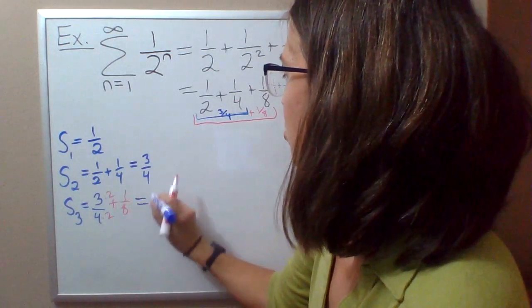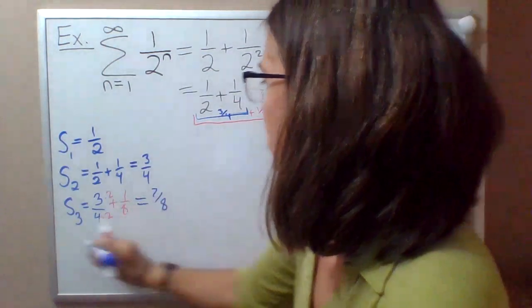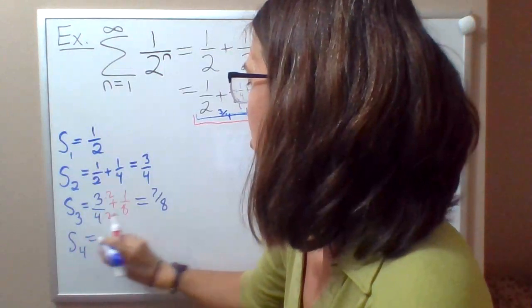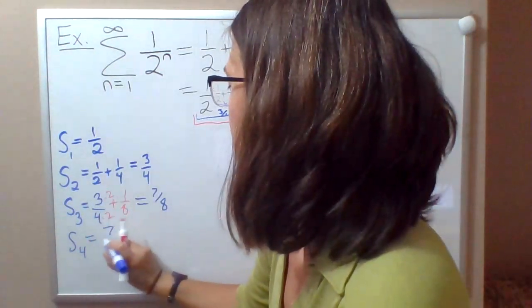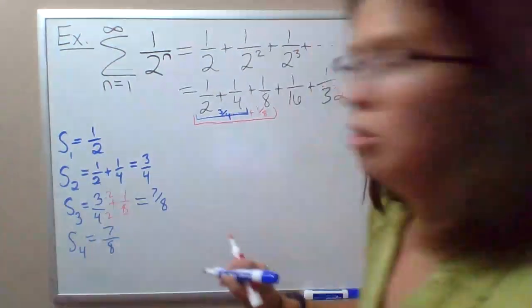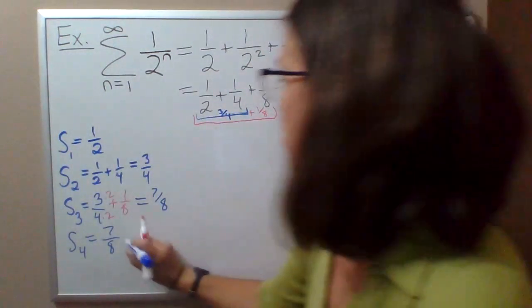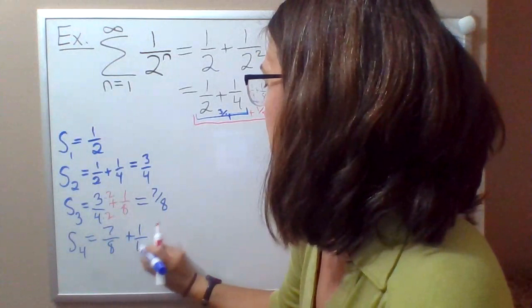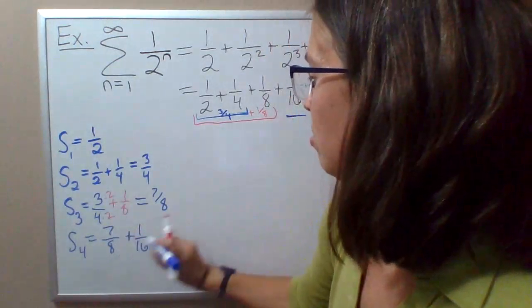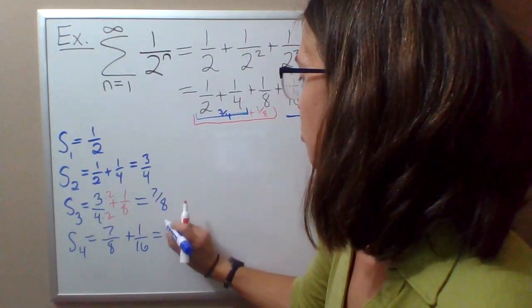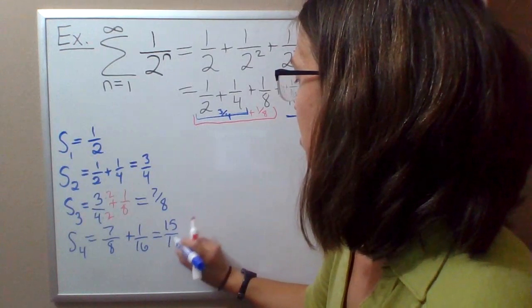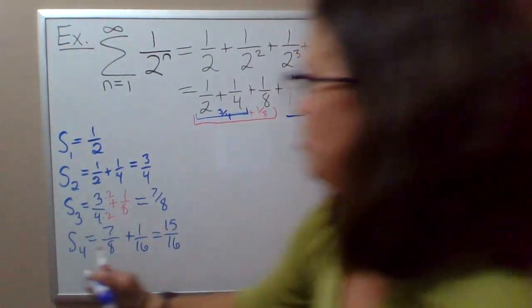I'll just do one more. Sum of the first four: we know that the sum of the first three is 7/8, no point adding those three up again, plus the next term 1/16. So that'll be 14 over 16 plus 1 over 16, so 15 over 16.